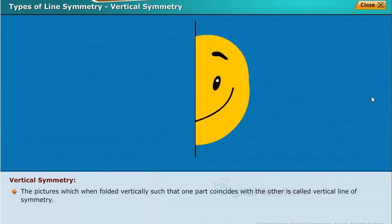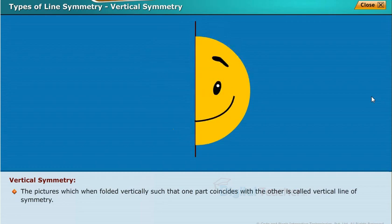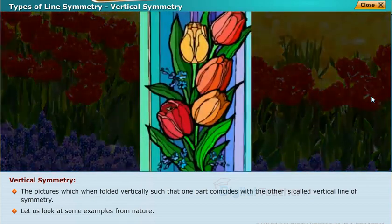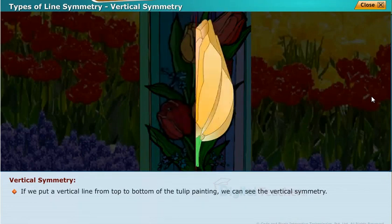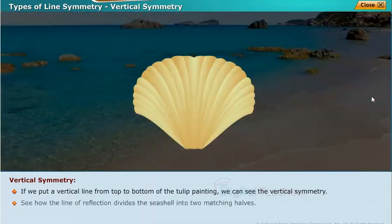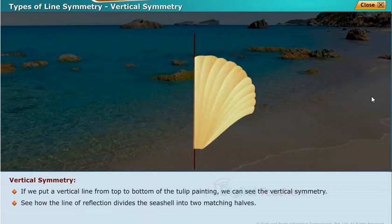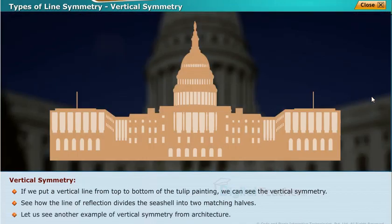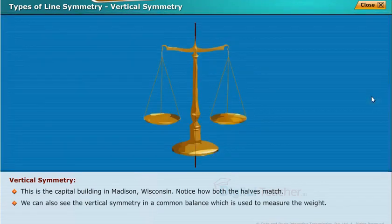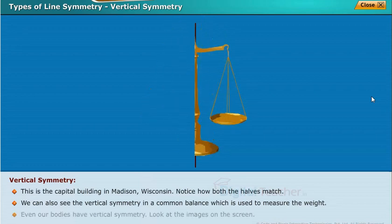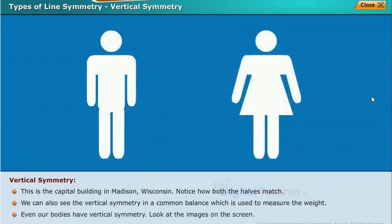A picture which when folded vertically such that one part coincides with the other is called vertical line of symmetry. For example, if we put a vertical line from top to bottom of a tulip painting, we can see vertical symmetry. The line of reflection also divides a sea shell into two matching halves. The capital building in Madison, Wisconsin also shows vertical symmetry. We can see vertical symmetry in a common balance used to measure weight, and even our bodies have vertical symmetry.